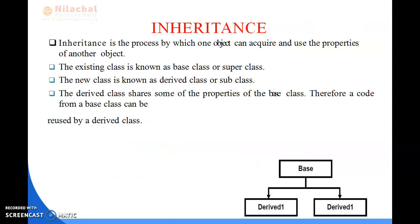Next, Inheritance. Inheritance is a process by which one object can acquire and use the properties of another object. The existing class is known as the base class or super class, and the new class is known as the derived class or sub class. The derived class shares some properties of the base class, so code from the base class can be reused. For example, the properties of your father come to you — your father is the super class and you belong to the sub class. The properties derived from the parent class come down through inheritance.